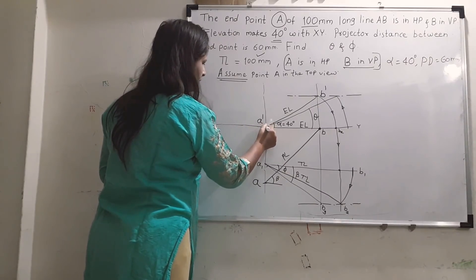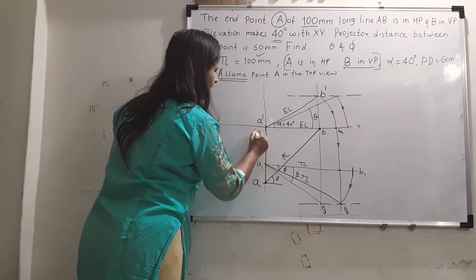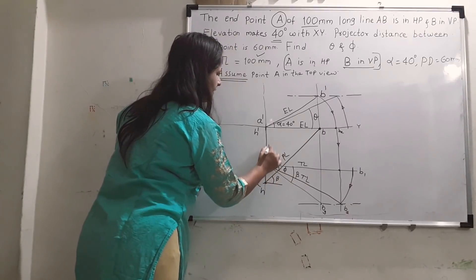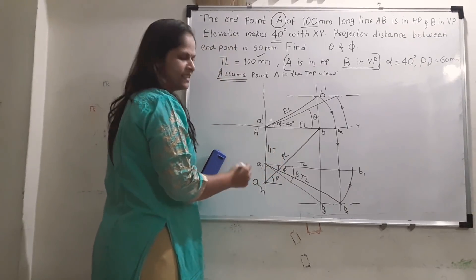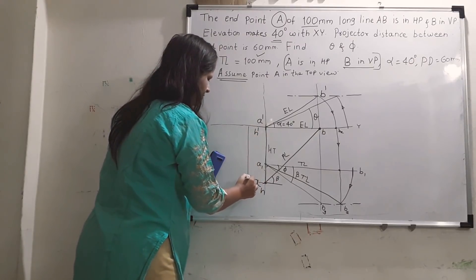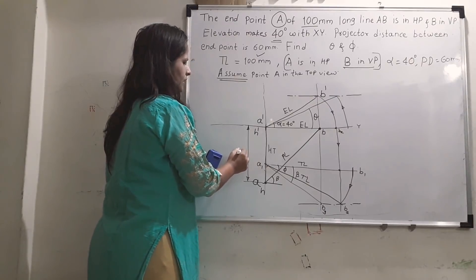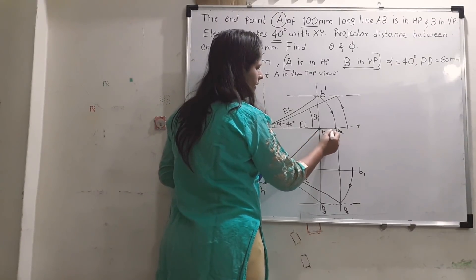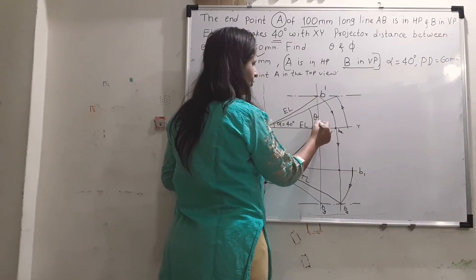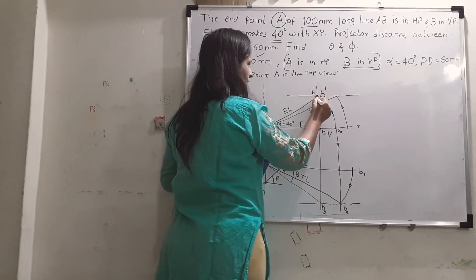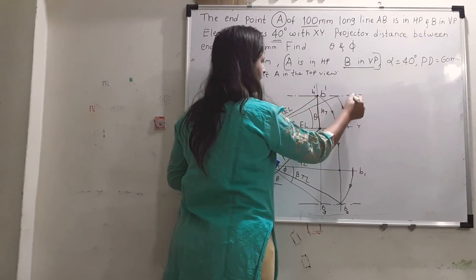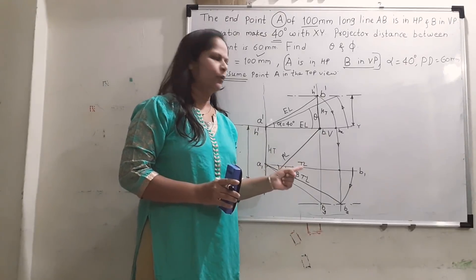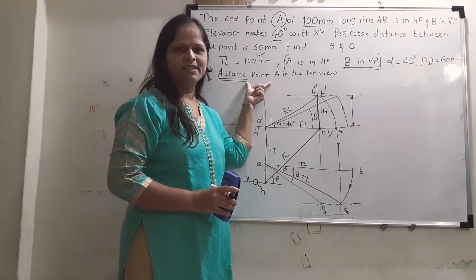Now for the traces: the front view is touching the XY line, so we come down to get H dash. Where the projector line meets the top view we get point H, which is the HT. In the exam, measure this distance and write its dimension. For VT, extend the top view until it cuts the XY line - that point is V. Draw the projector and where the front view meets it will be H dash. Measure the distance and write the dimension of HT and VT. That is how we draw the line problem when one data point is missing.